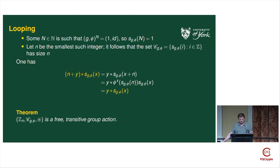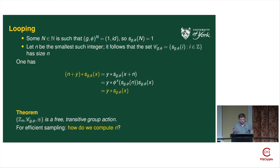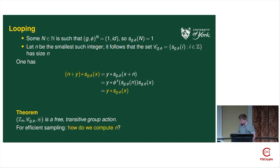It's not too difficult to show that the group of residues modulo n, together with this set and the star operation (step extended to residue classes), is a free transitive group action. This is our group action. In order for this to be useful, we need to know how to compute little n, because if we can compute little n we can compute this group and do uniform sampling — which solves the sampling problem.